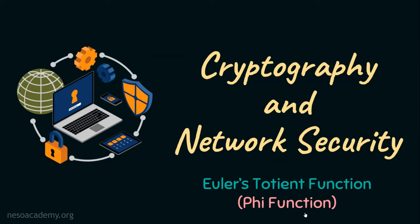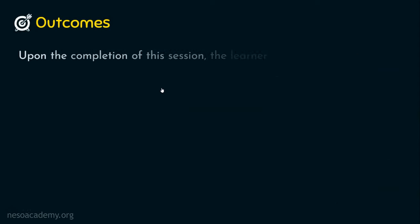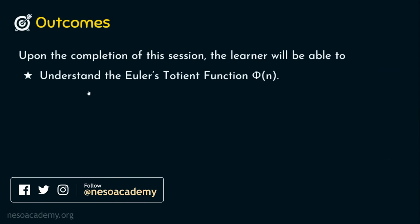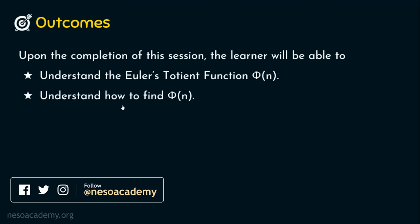Let's see the outcomes first. Upon the completion of this session, the learner will be able to: outcome number one, understand Euler's totient function phi of n; and outcome number two, understand how to find Euler's totient function phi of n.